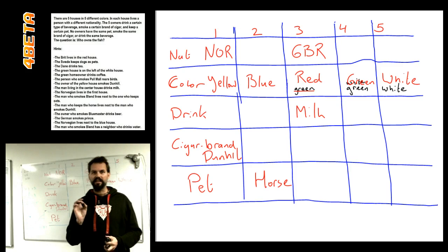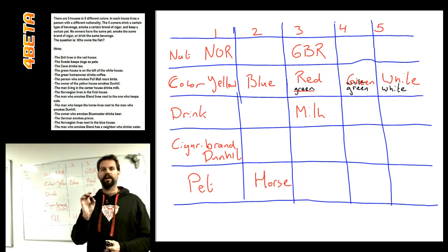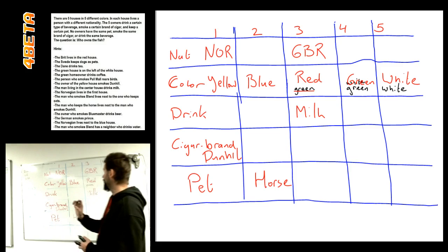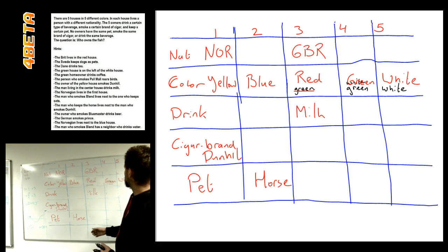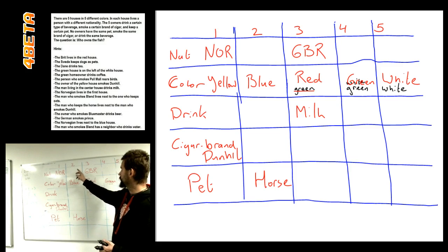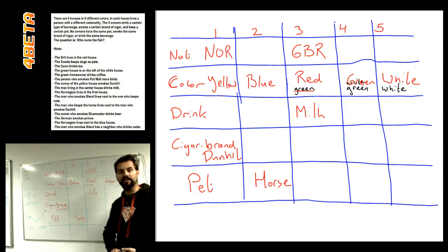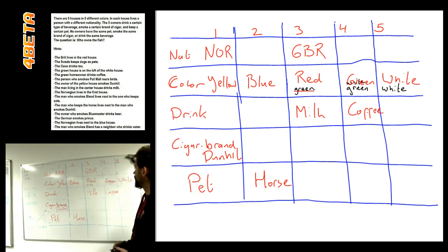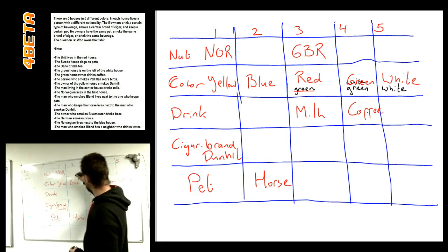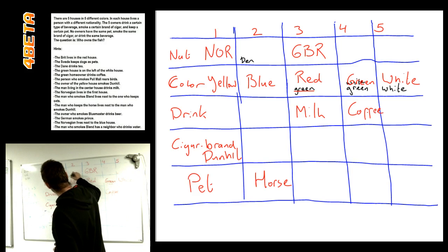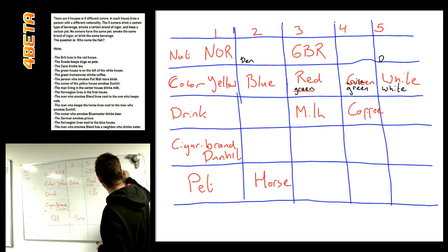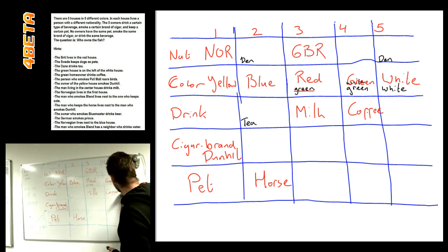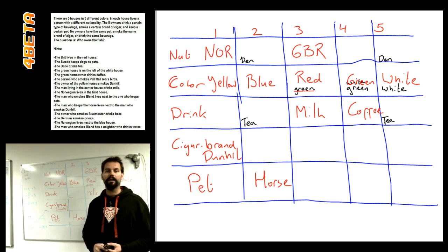Oh, yeah. The Danish guy drinks tea. So, we need to have an option where we have nationality and a country available. Sorry, and a drink available. And, well, it looks like two, four, five. But in the green house, we have coffee. So, the Danish guy can only live in house number two or five, where he's drinking tea.